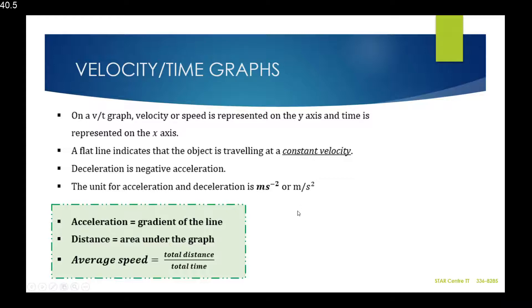Acceleration is also measured in kilometers per hour squared. From a velocity-time graph, acceleration can be found by calculating the gradient of the line at that stage.